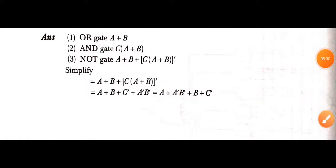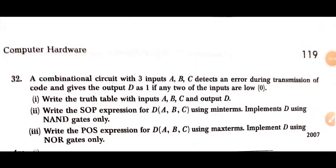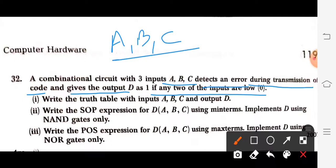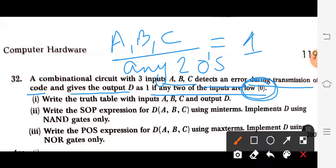Next question: a combinational circuit with three inputs A, B, and C detects an error during transmission of code and gives output D as 1 if any two of the inputs are low. That means if we have three inputs A, B, and C, and any two of them have value 0, then output D will be 1.